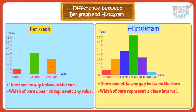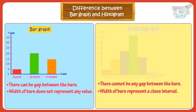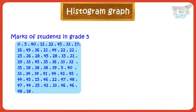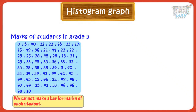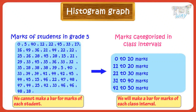So kids, we learned the difference between bar graphs and histograms. Now let's take a few more examples. We have marks of all the students in Grade 5. We cannot make a bar for each student as there are so many, so we will make class intervals or categories: students who got marks in the range of 0 to 10, 11 to 20, 21 to 30, 31 to 40, and 41 to 50. We will make a bar for each class interval rather than for each student.